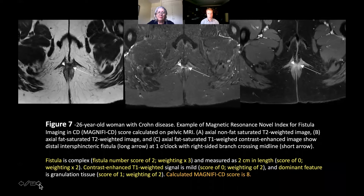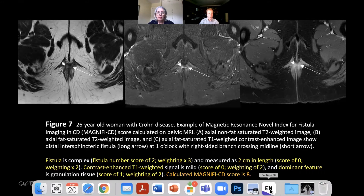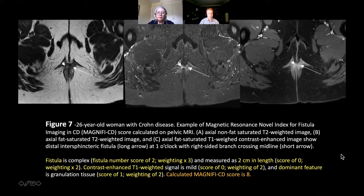In the paper we're going to go through quite a few of the activity scores that have been devised for Crohn's disease — both the detail of how you calculate the scores and the evidence base behind them. Looking at this figure, we've applied the Magnify CD score. When you go through these scores, you look at the complexity of the fistula.